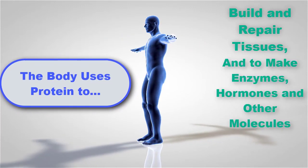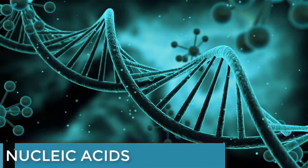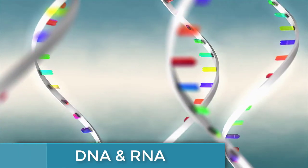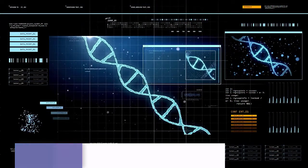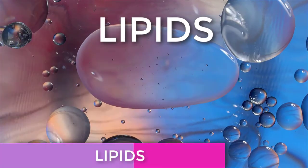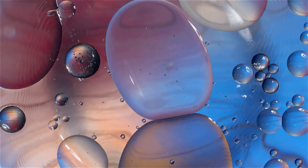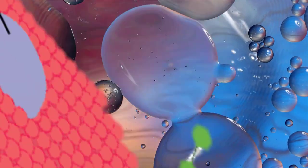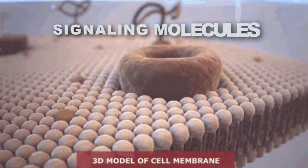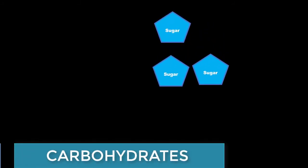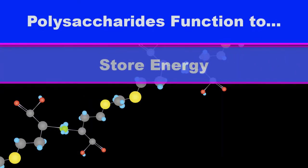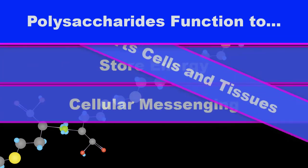Another important macromolecule needed for life is nucleic acids. Nucleic acids make up RNA and DNA — these molecules specialize in the storage and expression of genetic information. Lipids perform three primary biological functions: they serve as structural components of cell membranes, energy storehouses, and important signaling molecules. Carbohydrates are sugars including monosaccharides, disaccharides, and polysaccharides, which are used for storing energy, cellular messaging, and supporting the cells and tissues.